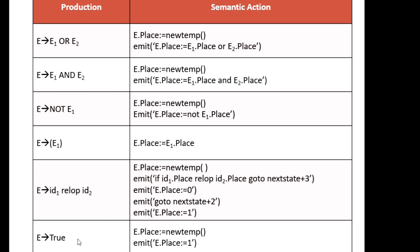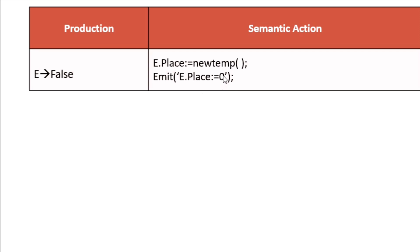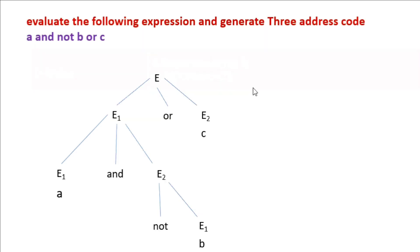If E → true, we create a temporary variable and emit E.place = 1. If E → false, we create a temporary variable and assign the temporary variable = 0. Now we will evaluate the expression a AND NOT b OR c and create three-address code for this specific expression.